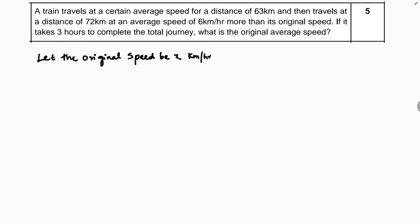In this problem, the train travels at a certain average speed for a distance of 63 km, and then travels 72 km at an average speed 6 km per hour more. So it covers 63 km at speed x, and the next 72 km at speed x plus 6 km per hour.